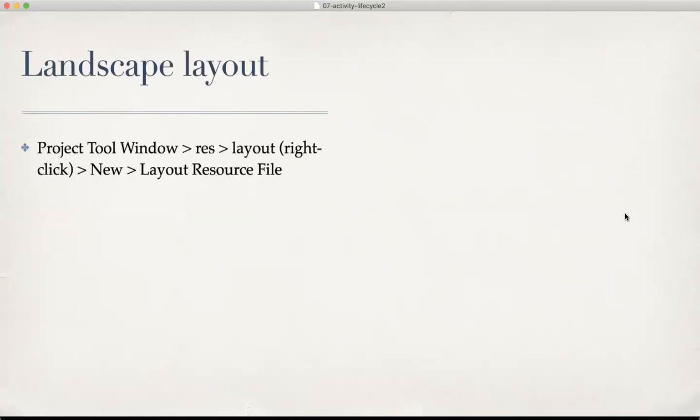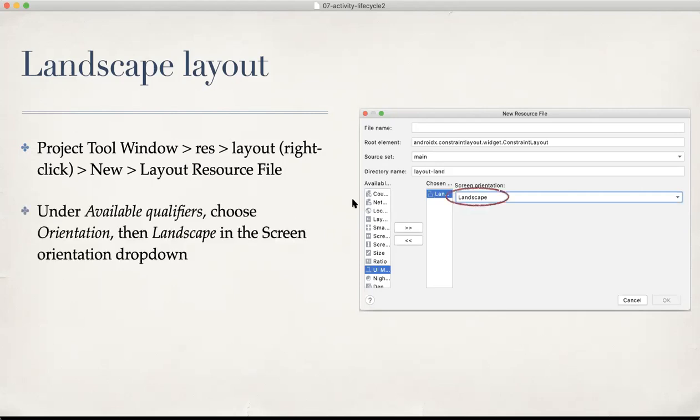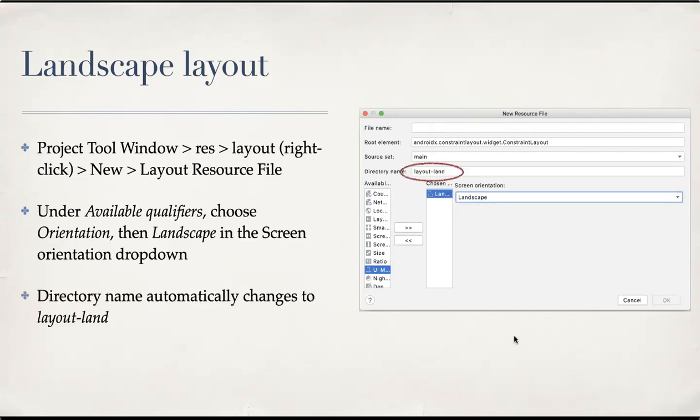All right, so landscape layout. To create that, you go to the project tool window, click on resources, go to layout, right click, select new, and then layout resource file. That will bring you to a window like this. On the lower half of the window, you will see the available qualifiers, and in that there is orientation. Select it by clicking this two greater than arrows. It will come to the chosen list here, and then select landscape in the screen orientation dropdown. Doing that will change the directory name to layout-land.